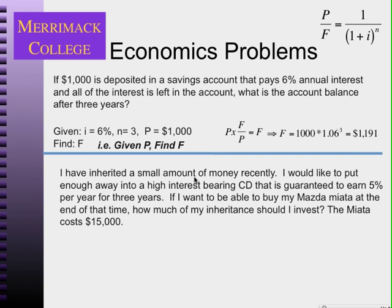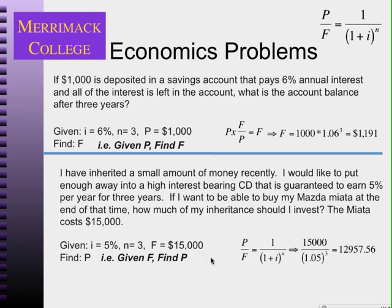Let's say I've inherited some money and I'd like to put enough into a high-interest-bearing CD guaranteed at 5% per year for three years. I want to be able to buy a Mazda Miata at the end of that time — the Miata costs $15,000. The interest rate is 5%, the number of years is three, and the future value I want is $15,000. How much money do I have to put in? I'm given F, and I want to find P. P/F equals 1/(1+i)^N, so multiplying by F gives the present value I need to invest.